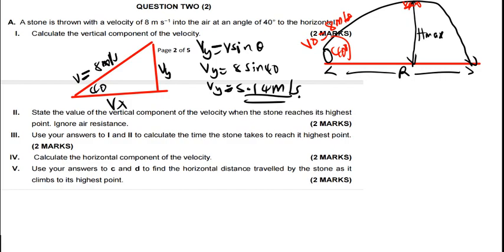Part two is saying: state the value of the vertical component of the velocity when the stone reaches its highest point — ignore air resistance. When you reach the maximum height, the velocity is 0. So the answer there is just 0. The velocity is 0 at that point.